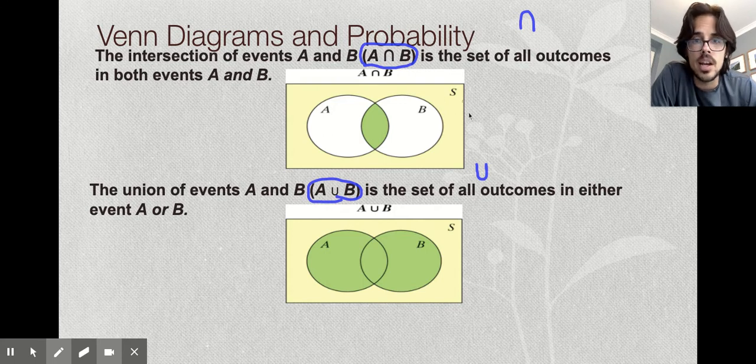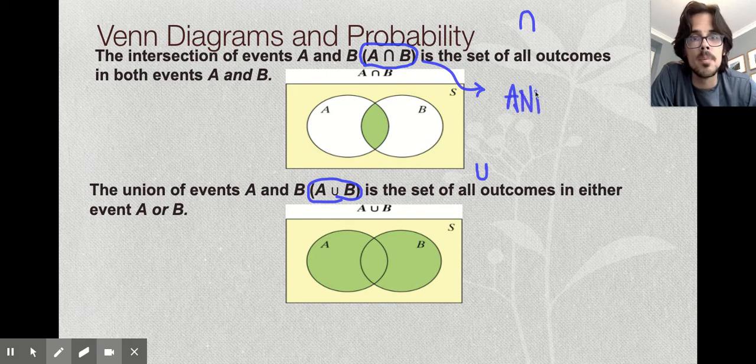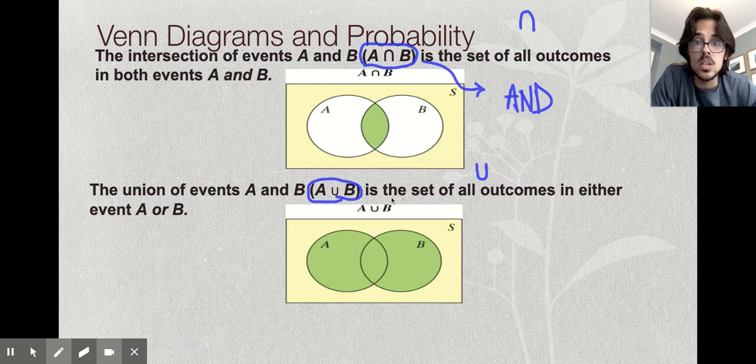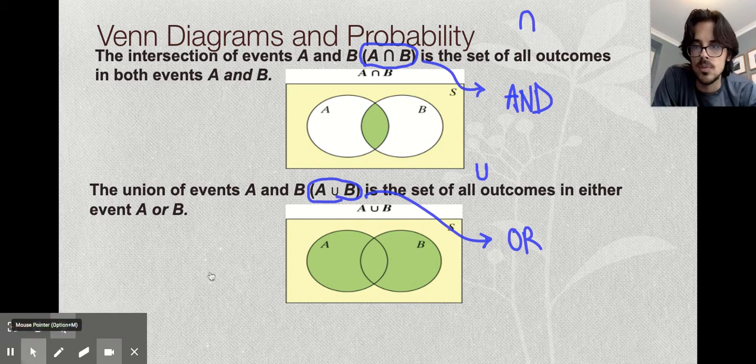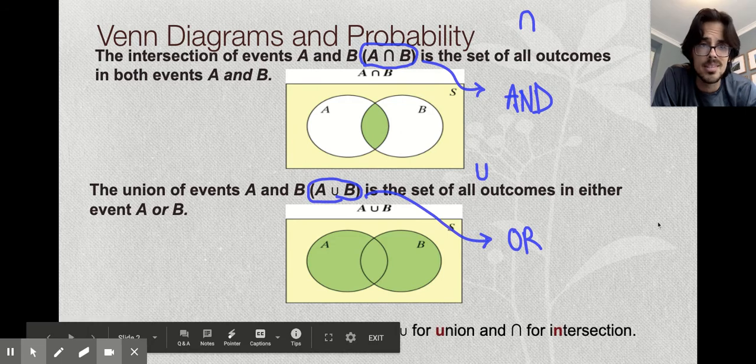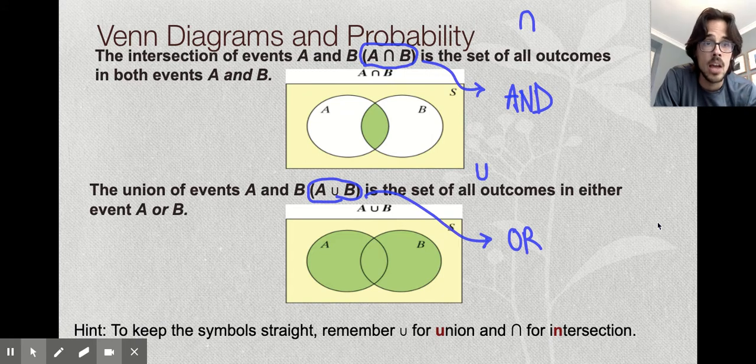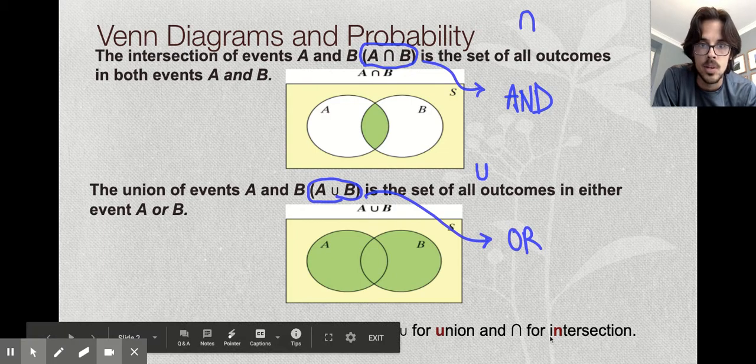Intersection works very naturally with the concept of AND in probability. You need A AND B, and it's this part in the middle. Union goes right along with the concept of OR probability. This or this or both. So Venn diagrams can be a helpful way of visualizing this stuff. I personally don't care for Venn diagrams a whole lot. I'd rather use a table, but I'm going to show you how they work so you're at least familiar with them.